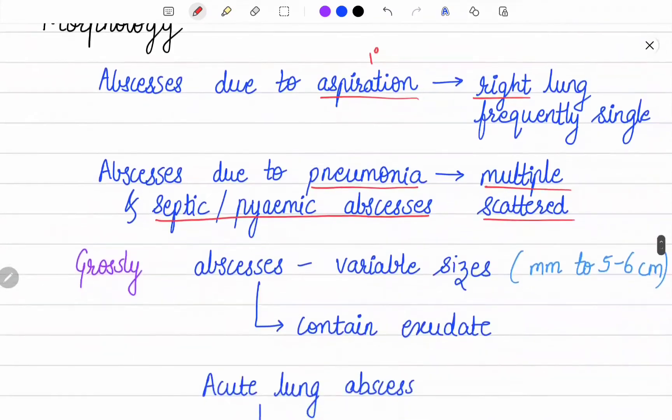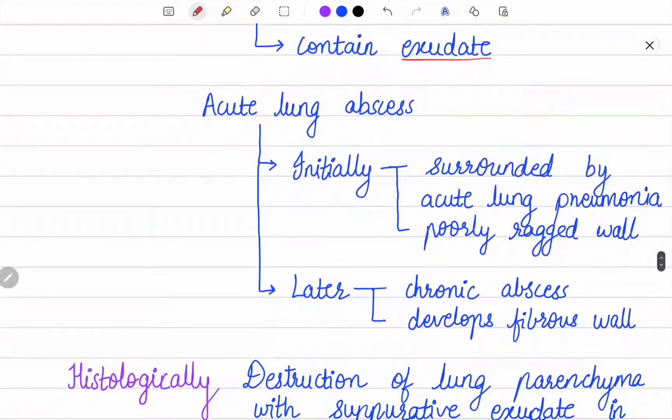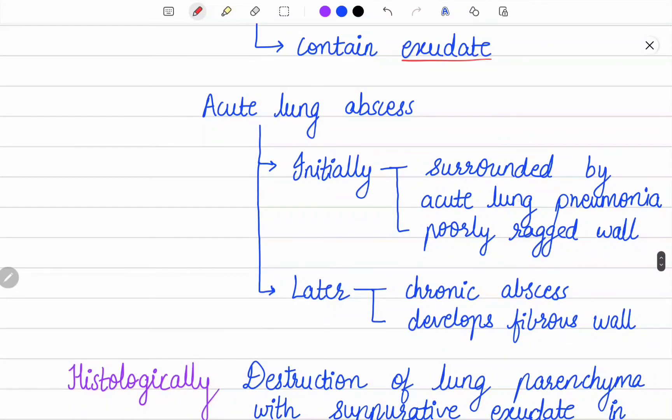Gross appearance: The abscesses may be of variable sizes from few millimeters to large cavities of 5-6 cm in diameter, and often contain exudate. An acute lung abscess is initially surrounded by acute pneumonia and has poorly defined ragged walls, whereas with time the abscess becomes chronic and develops a fibrous wall.